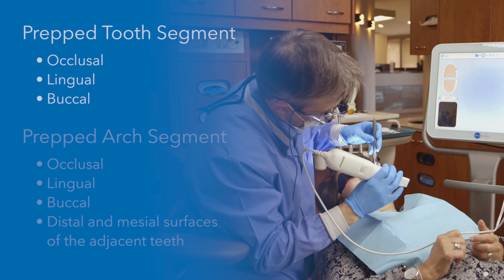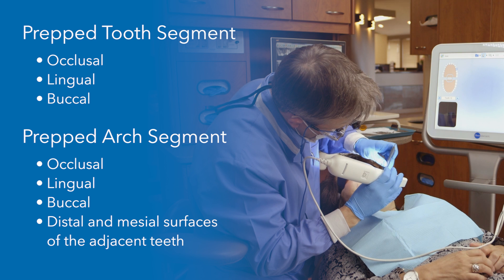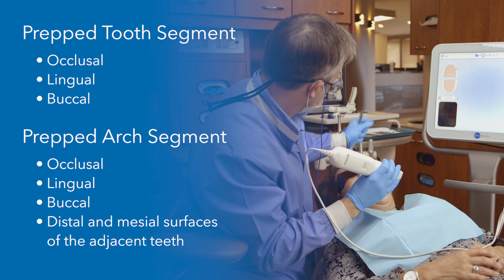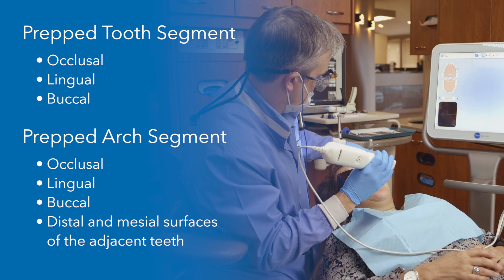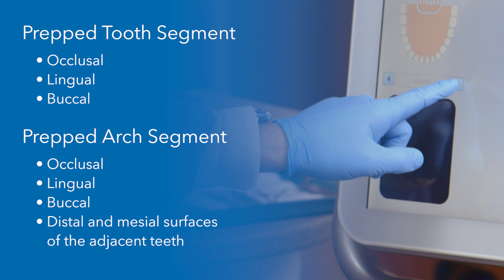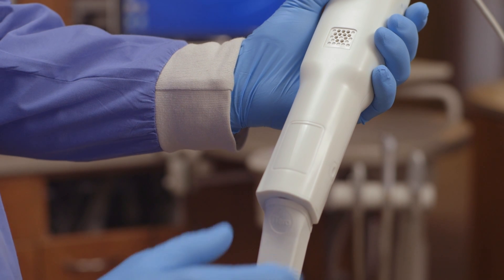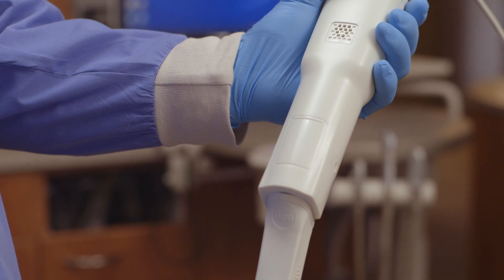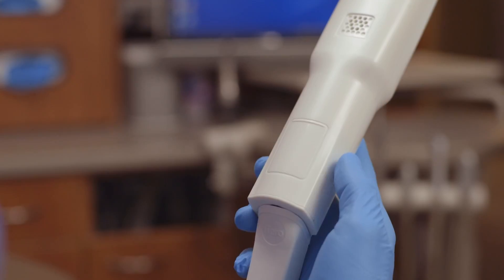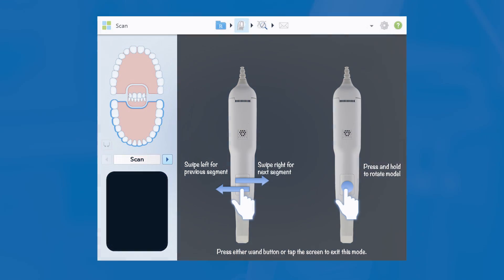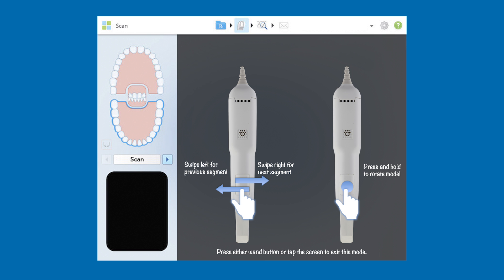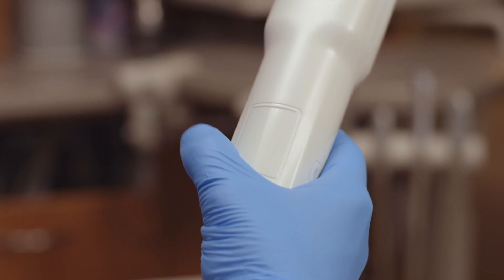Now that we've completed scanning the opposing arch segment, we are ready to scan the prep and the prepped arch. To move to the prep segment, I will either tap the arrow key on the segment indicator box or use the touchpad on the wand. Using these methods will ensure that I capture all the required scanning segments. To activate the touchpad, I will press and release both wand side buttons simultaneously, then use a steady firm swiping motion from left to right to move to the next segment. To go back to a previous segment, I will swipe from right to left.